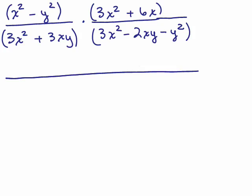So what do we get here? For x squared minus y squared is x plus y times x minus y. And over here, two terms take out the greatest common factor. It's 3x, and what will be left is x plus 2.